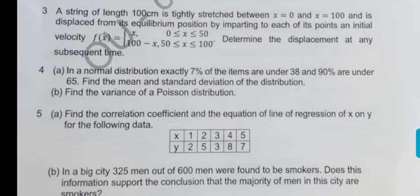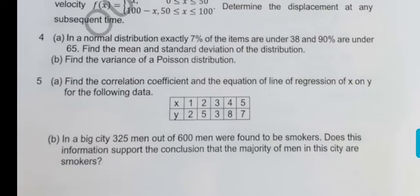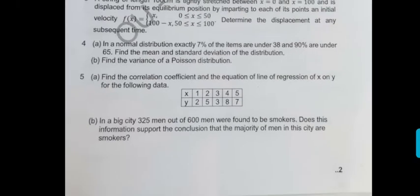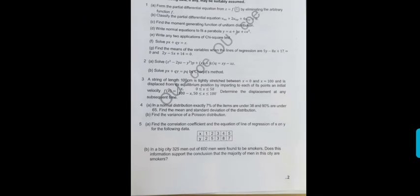Then fifth question, question number 5. It is a very simple question. Correlation coefficient analysis. Then question number 5B. In a big city 325 men out of 600 men were found smokers. So we have to take this. This is a population proportion question. Correct? Test of significance of proportion. Two proportions. One is smokers and another one is non-smokers we have to take. Right? So this is question number 5.